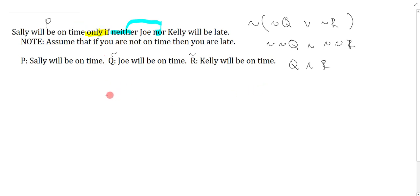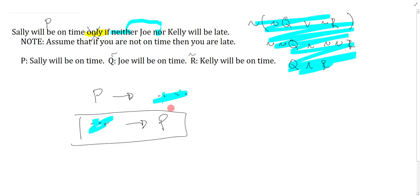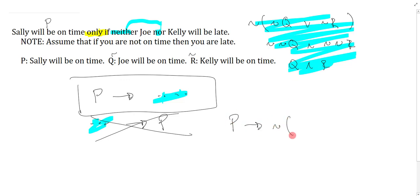Now I need to figure out the direction: is the sentence P → (neither nor) or (neither nor) → P? This comes down to decomposing 'only if.' If I remove the word 'only,' I'd say 'Sally will be on time if neither Joe nor Kelly will be late,' which makes the 'neither nor' the antecedent. But putting 'only' back reverses the direction. So it should be P → (¬Q ∧ ¬R). The 'only if' goes there, the 'neither nor' goes there, and be careful — the sentence says 'will be late,' so we negate the variables.